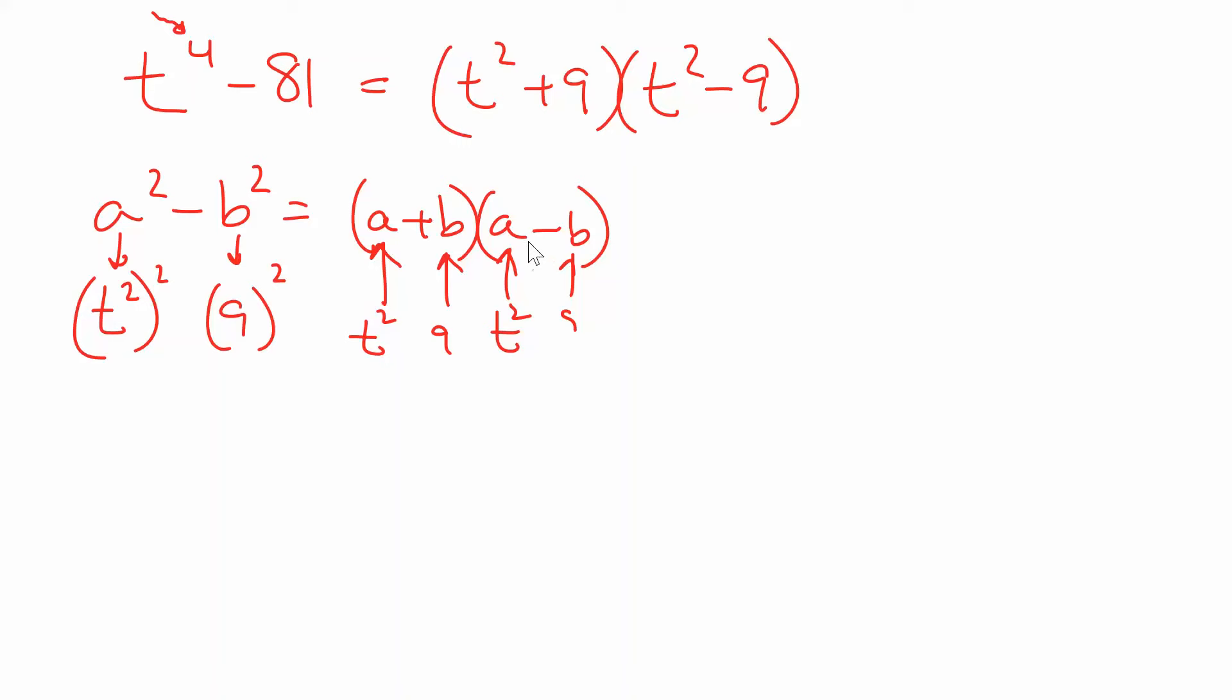So according to this formula, the t squared goes in here, 9 goes in there. This would be t squared plus 9 and t squared minus 9. If you look at this, can I factor this down anymore? The first parenthesis will not factor down anymore because in order to factor perfect squares down, you need to have a minus in between them. But this right here, t squared minus 9, that actually does factor down into t plus 3, t minus 3.